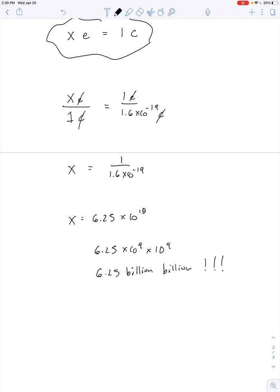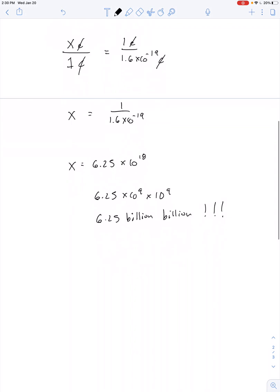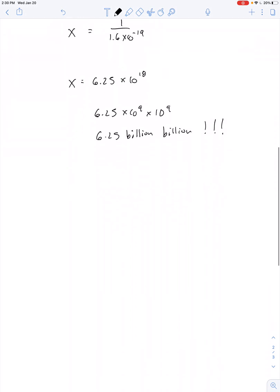Point being, it's a very large number of electrons. And it's not typical that you ever transfer that many electrons, at least not terribly easily. So a coulomb of charge turns out to be a very large amount of charge, relatively.